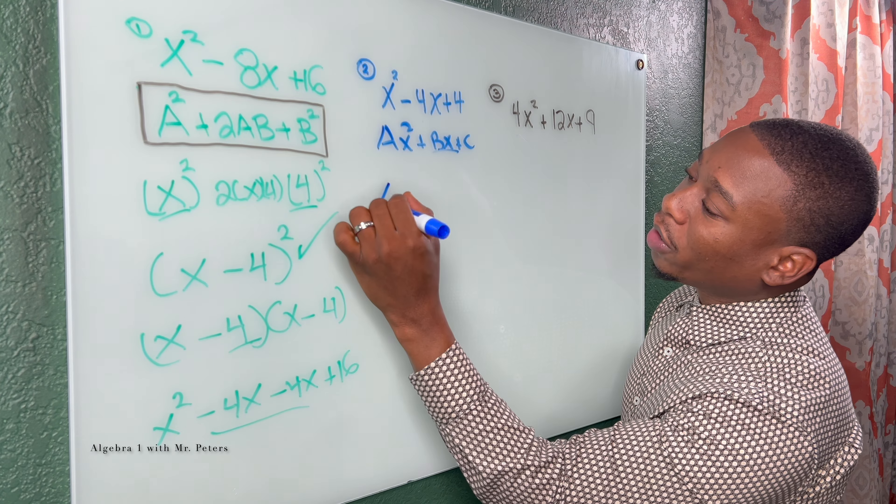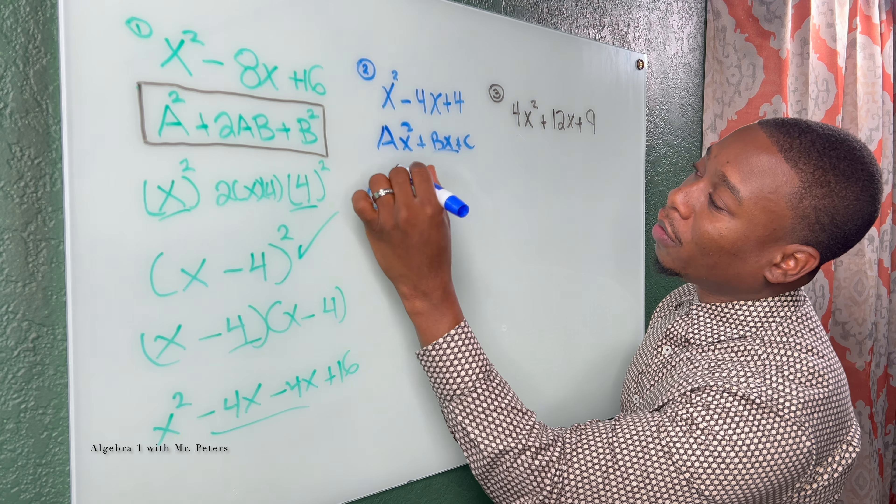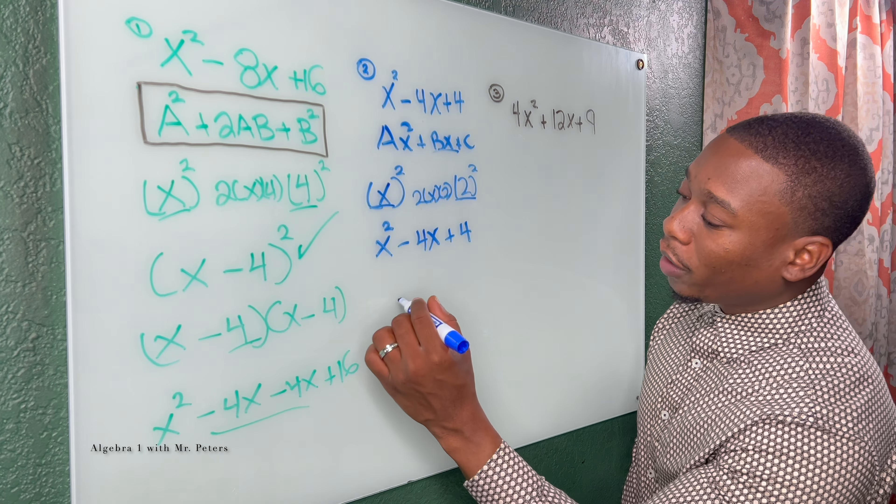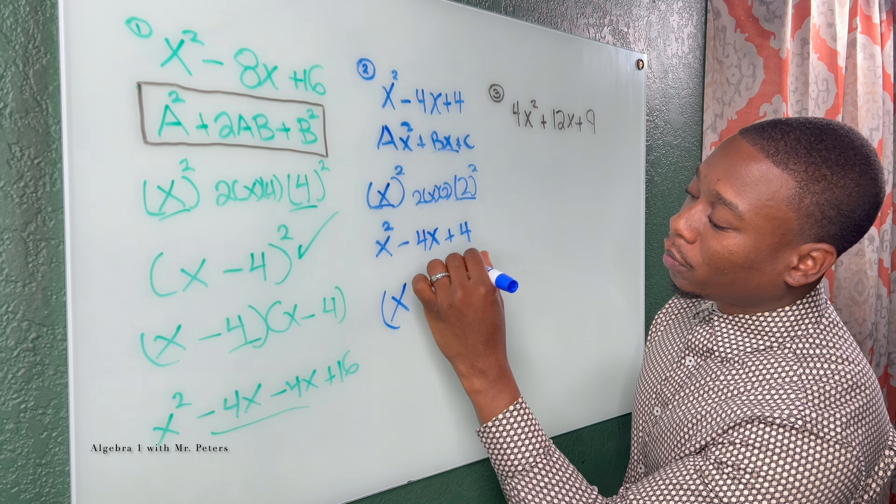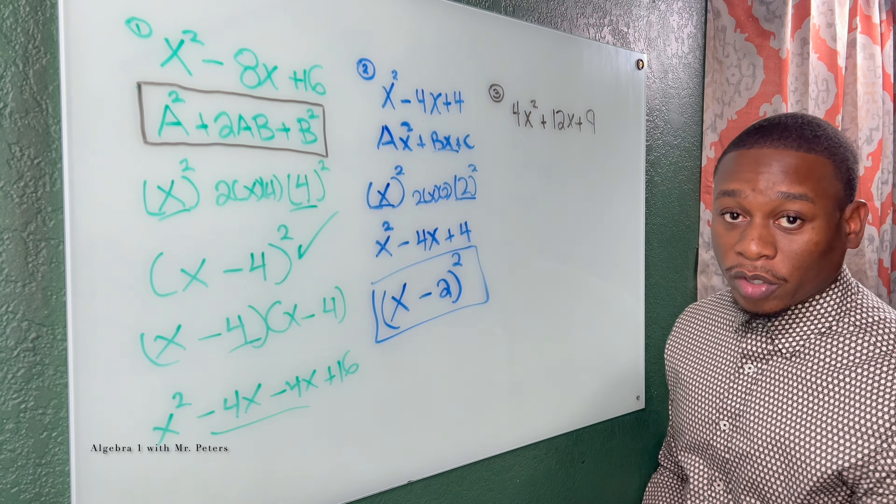So we know square root of x squared is just x, square root of 4 is 2 squared, and then in the middle we have 2 times ab which is x and 2. So when we look at this, this turns into x squared, 2 times x times 2 gives me 4x, put the negative sign, and then here 2 squared gives me 4. So we know we have the same exact trinomial. Now when we write its factor, it's just x minus 2 squared and this is what will give us this perfect square trinomial.